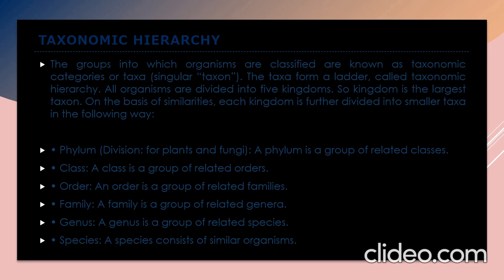A phylum is a group of related classes. A class is a group of related orders. An order is a group of related families. A family is a group of related genera. A genus is a group of related species. A species consists of similar organisms. You need to remember this sequence: kingdom, phylum, class, order, family, genus, species.